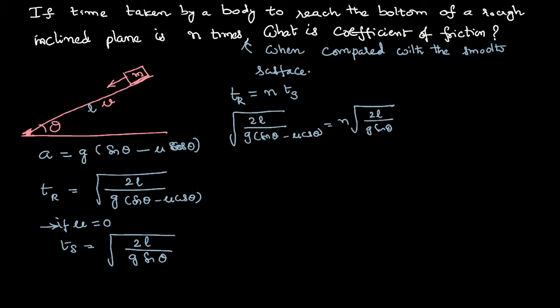By squaring these equations and canceling the common terms we can get 1 by sin theta minus mu cos theta equal to n square by sin theta. If you simplify this equation further, n square sin theta minus n square mu cos theta equal to sin theta itself.